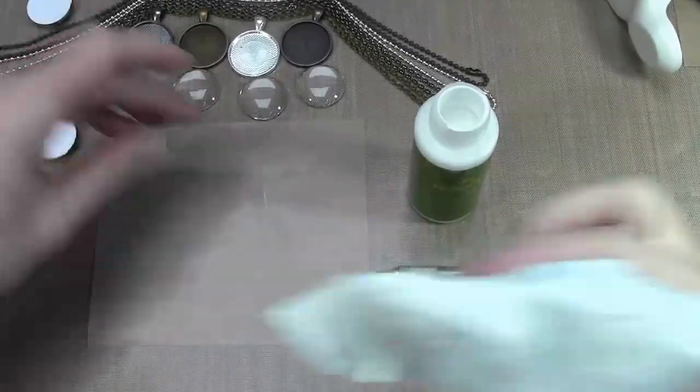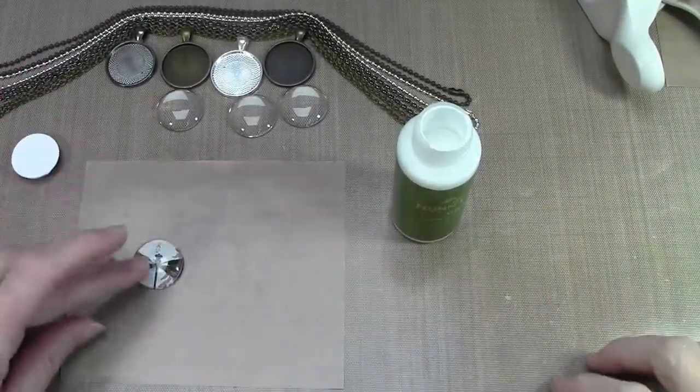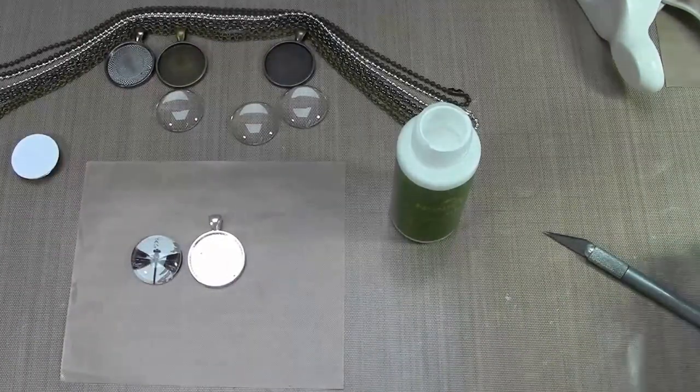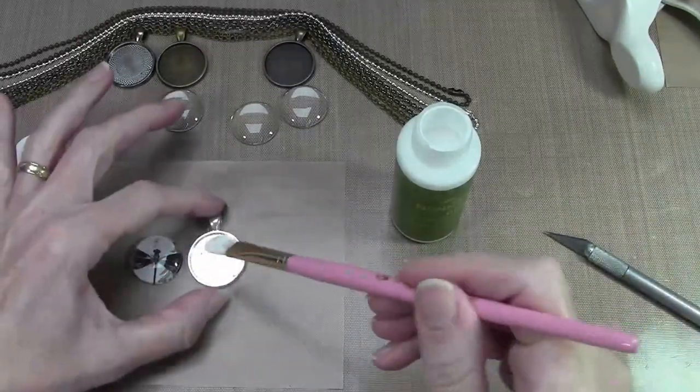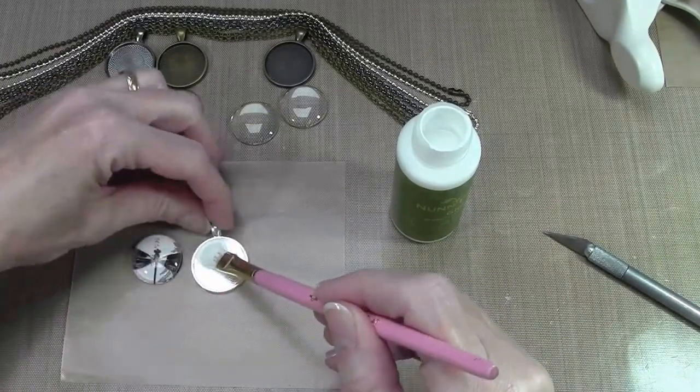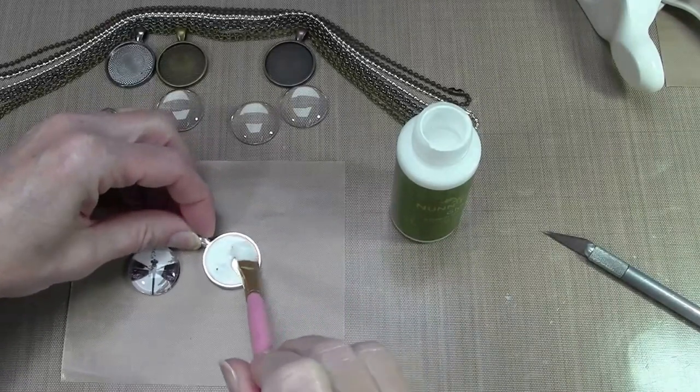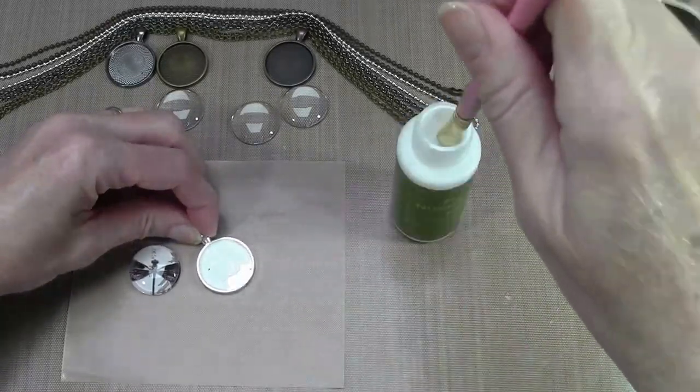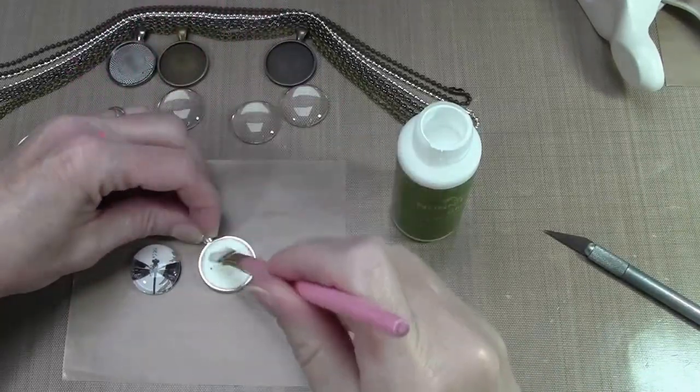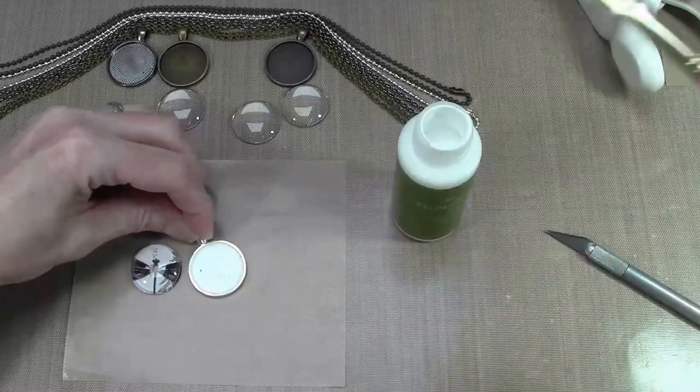So I have one that I've already dried to save time. It's a different image and I'm going to use the silver tray for this one. And this time we are just going to put a thin coat of the glue all around on the bottom and a little bit up the sides of the tray.